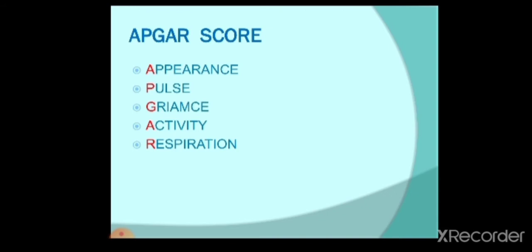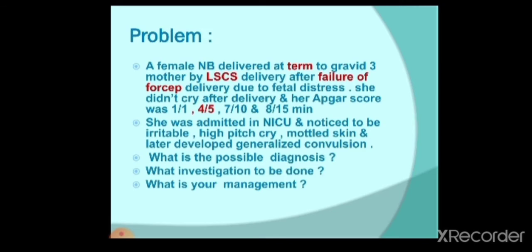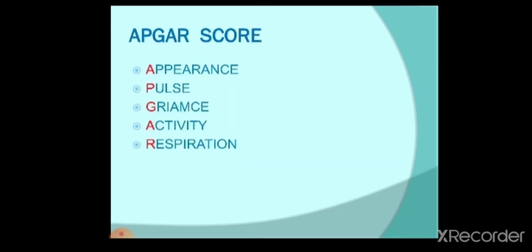After delivery, we always assess the newborn using something called the APGAR score. The APGAR score is out of 10 and has five components, each scored 0, 1, or 2. The five components are: appearance, pulse, grimace, activity, and respiration. The baby should have at least 8 out of 10 to be considered normal. If the score is less than 7, we need to intervene to improve the baby's condition.